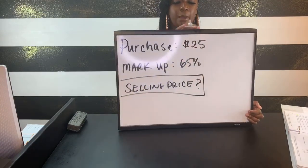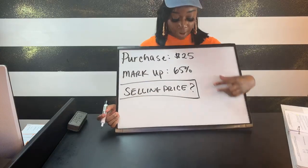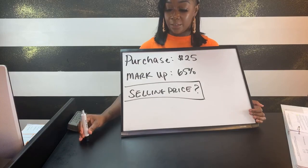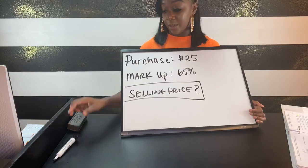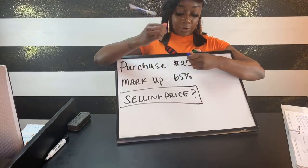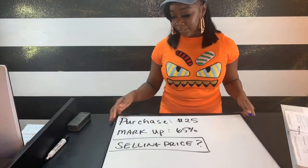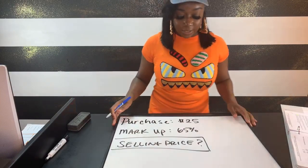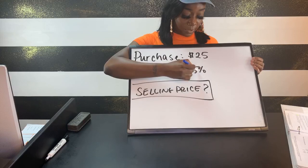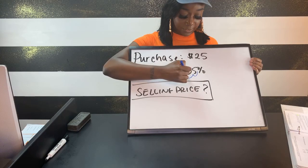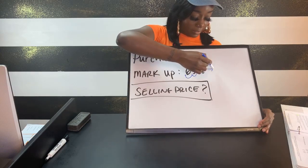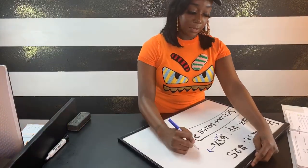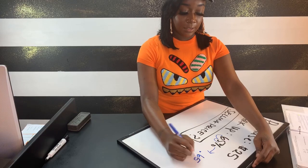Anytime we're dealing with word problems and percentages, your percentages always have to be converted to decimals, because you cannot do any actual math with percentages without converting first. To convert a percent to a decimal, you move the decimal two places to the left. Because we're dealing with a whole number, we put the decimal at the end, so 65% becomes 0.65.